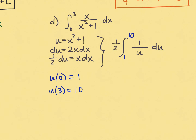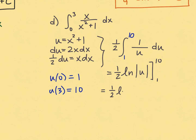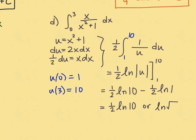This is u to the negative first, so it's a natural log — not the power rule. This equals one half the natural log of the absolute value of u, evaluated from 1 to 10. By the first fundamental theorem of calculus, plug in 10 and subtract plugging in 1. The natural log of 1 is 0, so the result is one half the natural log of 10. Using the power property of logarithms, you can also write this as the natural log of the square root of 10.